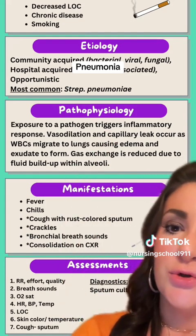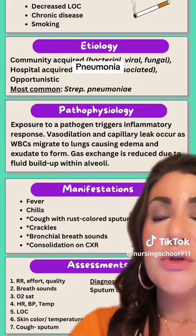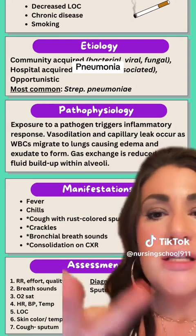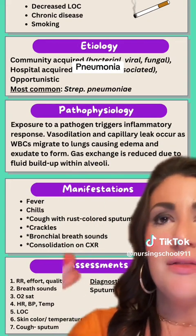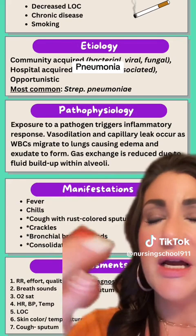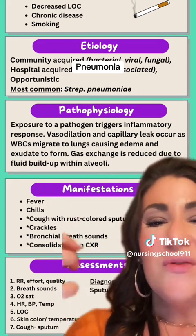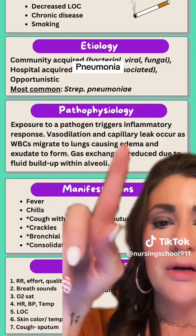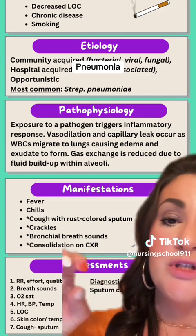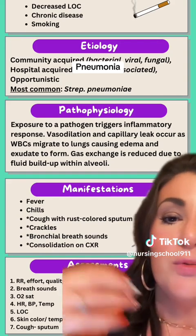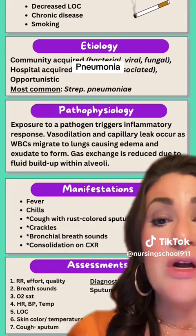So that pathogen — obviously there has to be exposure to it — then triggers the inflammatory response. The inflammatory response sets into motion lots of things, including massive vasodilation. The inflammatory response and all the chemical mediators that go into it kind of damage the capillaries, leading to this capillary leak. Then the white blood cells are going to migrate to that area where the pathogen has landed within the lungs, and this leads to formation of edema and what we call exudate.